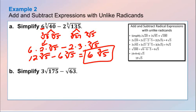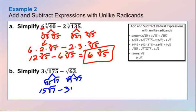Next example: 175. This is the square root. 175 divided by 25 — because 25 is a perfect square — gives us the square root of 25 times the square root of 7. The square root of 25 is 5, and 5 times 3 is 15 times the square root of 7. For 63: that's the square root of 9 times the square root of 7, which gives us minus 3 square root of 7. Like radicands! So 15 minus 3 is 12 times the square root of 7.